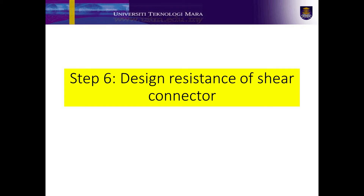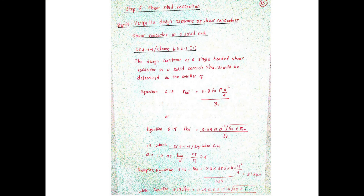Step 6: Design Resistance of Shear Connector. The design resistance of a single-headed shear connector in a solid concrete slab should be determined as the smaller of equation 6.18 or equation 6.19, in which the alpha value is taken as 1.0 when the height of the shear connector over its diameter is larger than 4. Inserting the alpha value into equation 6.18 yields a design resistance of 81.7 kN.